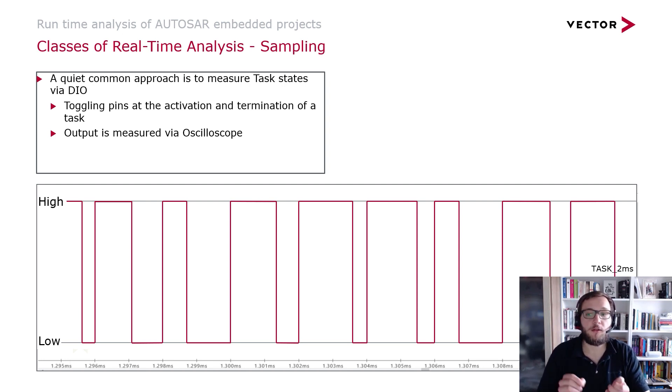Of course you can not only do that for the idle task, you can also do that for a certain task as shown here in this example. We can see a task two millisecond and every time when this task is getting activated it is a high signal and every time it's getting terminated we're back to low. By that you can very easily see what's the total runtime of this task and also what's the overall CPU utilization a certain task is taking.